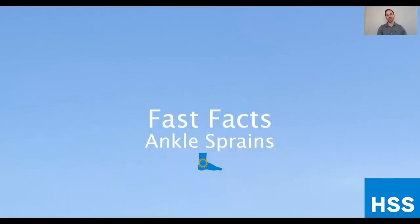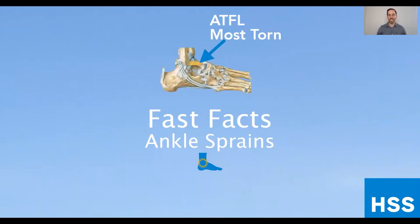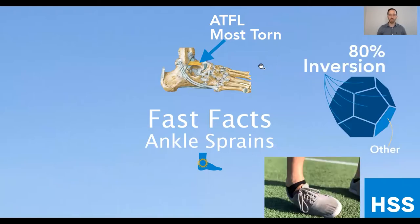Some quick facts about ankle sprains: the ATFL is the most commonly torn ligament in the foot and ankle — also the most commonly torn ligament in the entire body. About 80% of ankle sprains are caused by an inversion ankle injury. You can see a picture of an inversion twisting of the foot in the bottom right corner. This is a very common way for the foot to turn in, putting a large load on the ATFL ligament and sometimes causing it to sprain or even completely rupture.